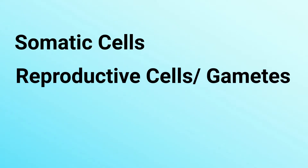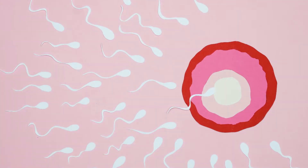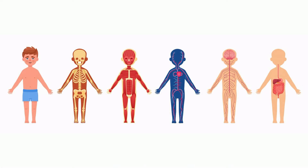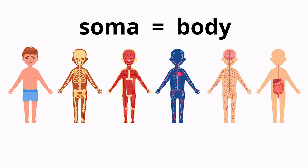In humans and other animals, these gametes are the egg and the sperm cells. All other cells in the body are somatic cells. Think of every body part you have — they are all made up of somatic cells. The word somatic is derived from the Greek word soma, meaning body.